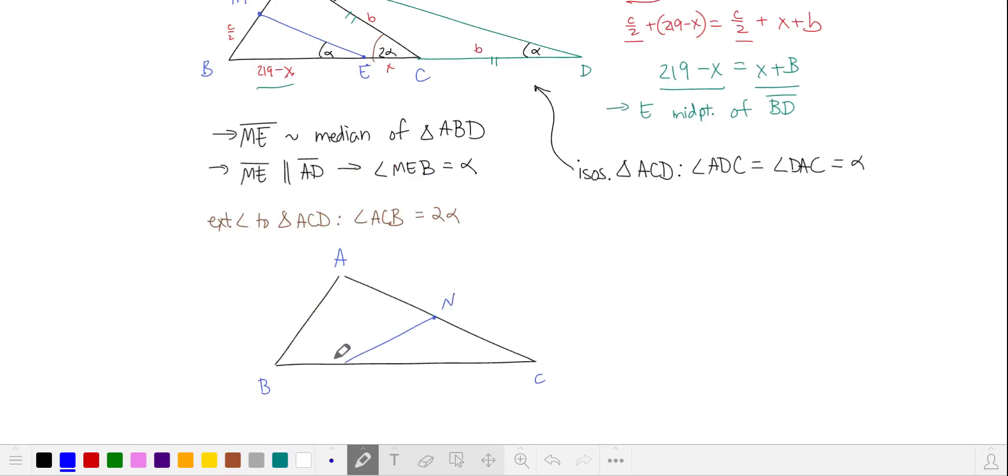We can do a similar analysis with our other splitting line, NG. Extend BC in the other direction, call this point F, join it to A, creating this other isosceles triangle ABF. We'll label these angles beta. This exterior angle is 2 beta, and this angle is also beta.